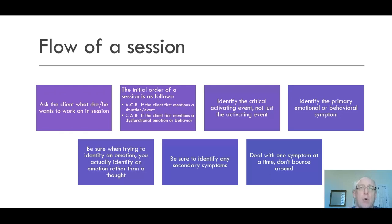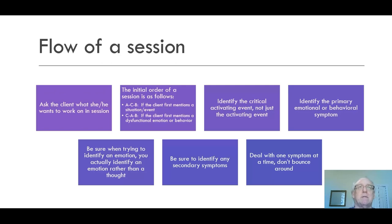The typical order in which we do things is to get the ABC. The A is the situation or event — we're trying to get the critical activating event. C would be the consequences — the emotions and behaviors — and then B would be those beliefs, typically irrational or unhelpful beliefs that give rise to dysfunctional emotions and behaviors.